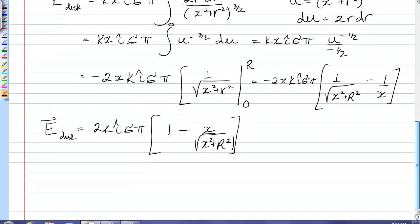Now I can't leave sigma there because I wasn't given it in the problem. So sigma is equal to the total charge over the total area of the disk, which is pi r squared. So sigma times pi is just q over r squared. I've got a q over r squared out front, and in the brackets I have 1 minus x over the root of x squared plus r squared. And that is the electric field due to a uniformly charged disk.